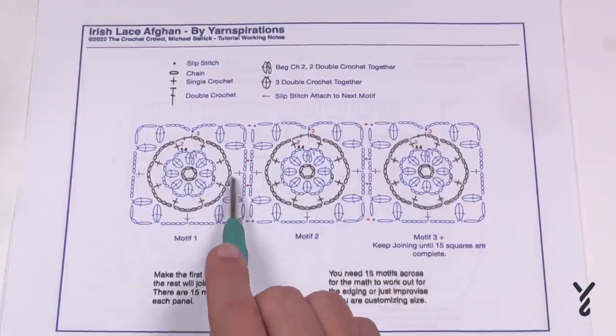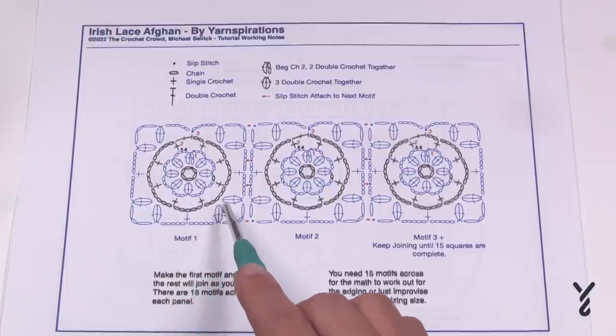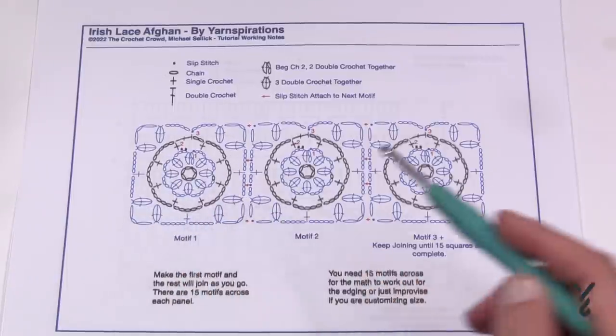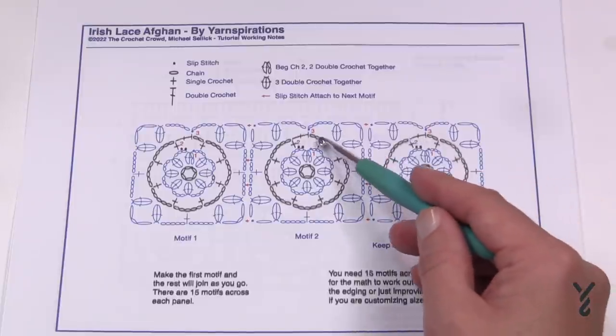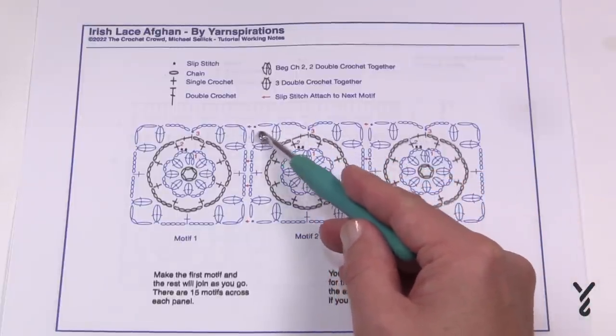So you're going to do the very first one and it will look like this. If you're familiar with crochet diagrams you just have to create the first one and then once you create the first one the next one when you go to start it it will be joining it on the corners.